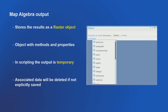Output is a raster object. All objects have methods and properties. It is temporary — because in modeling we create lots of intermediate output and we don't want to save every output to disk. That would fill up disk space and writing to disk is slow. But you have to save explicitly, otherwise it's gone.